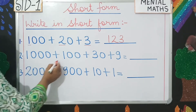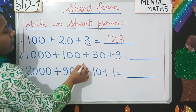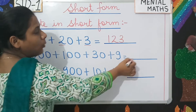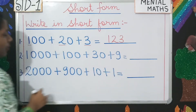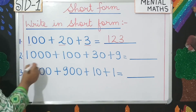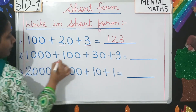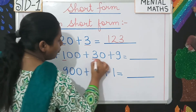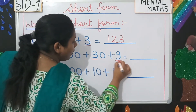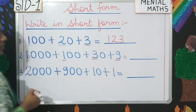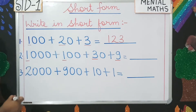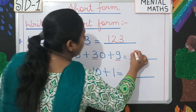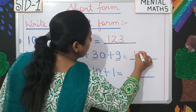Number two: 1,000 plus 100 plus 30 plus 9 equals dash. Pick the first number from each: 1, 1, 3, 9. So your answer will be 1,139.